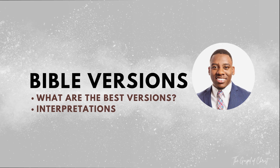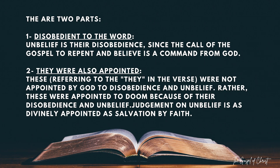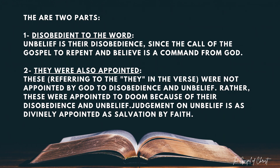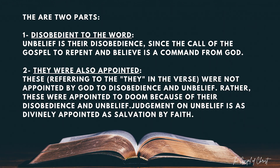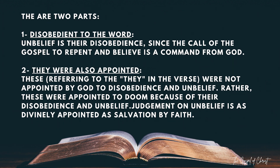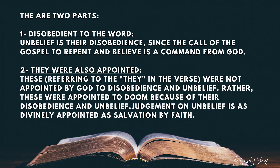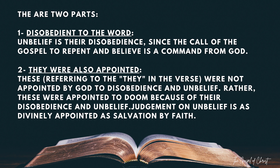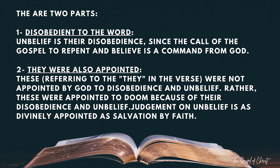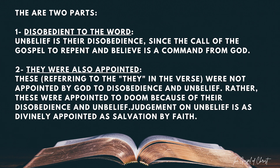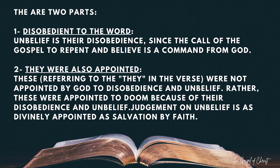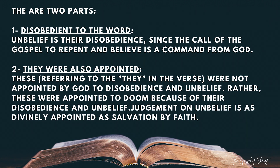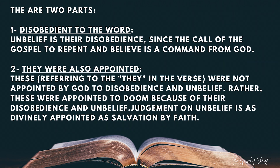There are two parts. Part one: 'disobedient to the word' — unbelief, he explains, is their disobedience, since the call of the gospel to repent and believe is a command from God. Part two: 'they were also appointed' — he explains that these, referring to the 'they' in the verse, were not appointed by God to disobedience and unbelief. Rather, they were appointed to doom because of their disobedience and unbelief. Judgment on unbelief is as divinely appointed as salvation by faith.